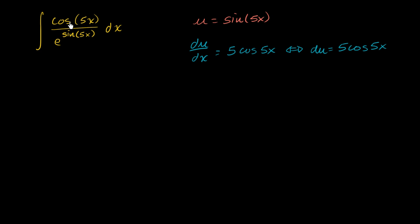When we look over here, we don't have quite du — we have just cosine of 5x dx, not 5 cosine of 5x dx. But we know how to solve that: we can multiply by 5 and divide by 5. One fifth times 5 is just 1, so we haven't changed the value of the expression.